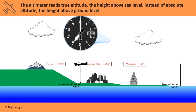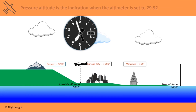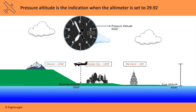As we fly inland over higher elevation areas, the altitude indication won't change while our absolute altitude drops to 5,000 feet above a place like Kansas City. If the altimeter is set to the standard pressure of 29.92, it will read pressure altitude. In this example, setting it from 30.00 to 29.92 causes the indication to fall to 5,920 feet. This is the pressure altitude for this flight, used in performance calculations.